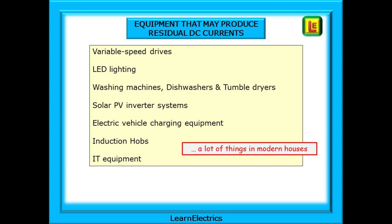Equipment that may produce DC residual currents includes solar PV and inverter systems, electric vehicle charging equipment, induction hobs, and IT equipment — and the list could go on. There are lots of things in modern houses, factories and offices, and every day there is new electronic equipment being invented.